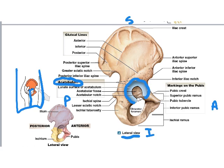The hip, on the other hand, is much deeper and well protected than the shoulder joint. On the pelvic bone side, that fossa or depression that the head of the femur fits into is called the acetabulum — or the acetabular fossa, which is basically the depression for the acetabulum.